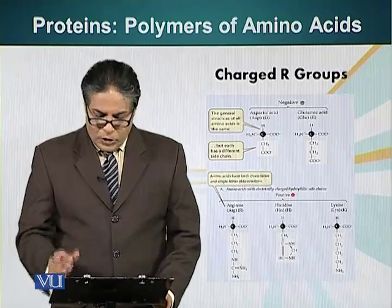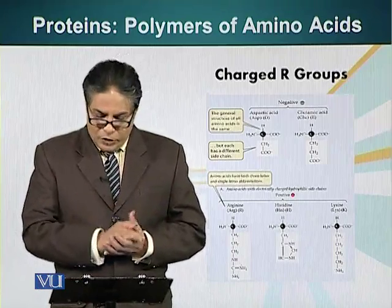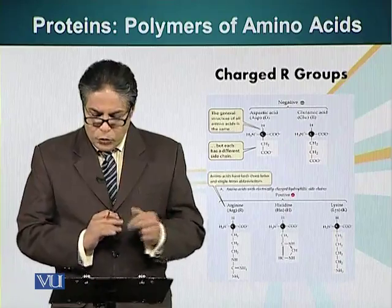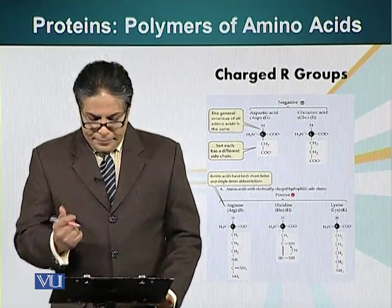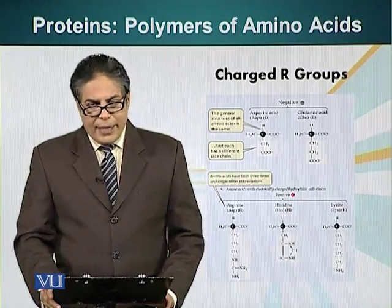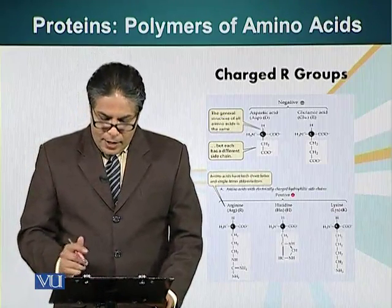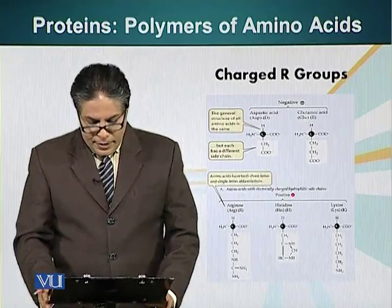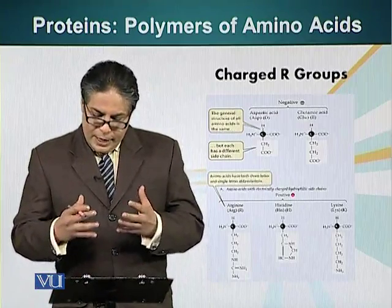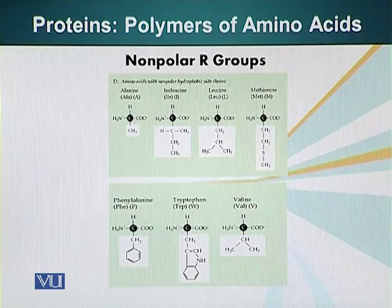The first group is amino acids which have charged groups. There are two types of charges: positive and negative. Two amino acids have a negatively charged R-group — for example, aspartic acid and glutamic acid. Both have a negative charge because of a carboxyl group. The other group is positively charged amino acids, with three amino acids whose R-groups carry a positive charge.